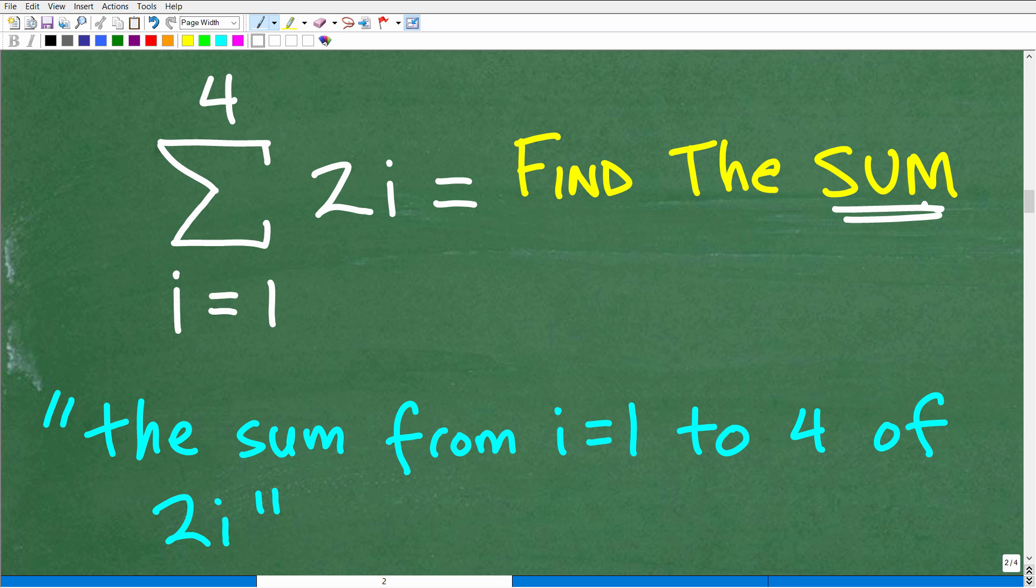Now, just to understand how you would say this - how you would describe this - you would say: the sum from i equals 1 to 4 of 2i. That's how you would describe this. So if someone asks you to say what this means, you don't say 'sigma i 4 2i'. You say 'the sum from i equals 1 to 4 of 2i'. Sigma notation, again, is a lovely way to express a series.